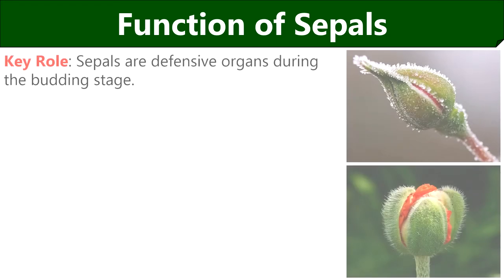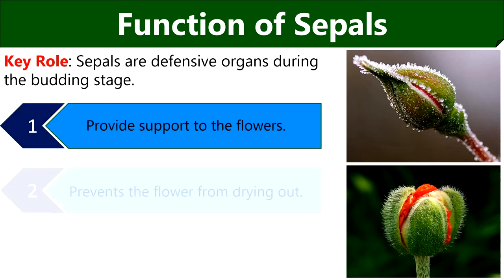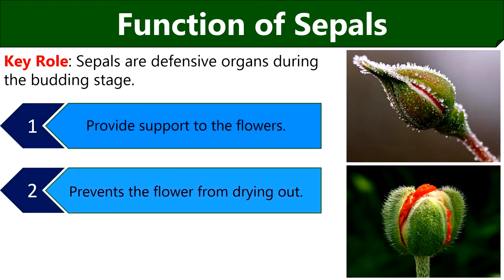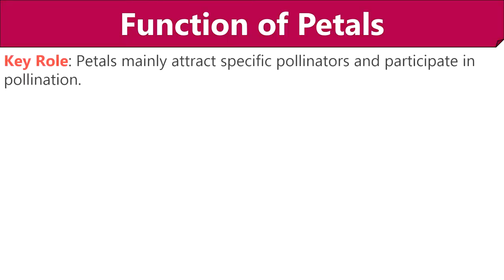Now it's time to know the function of each floral part, starting with sepals. Sepals are defensive in function and protect the flower during the budding stage. In these pictures you can clearly see how the sepals enclose and protect the inner components of a flower from harsh conditions during the developing stage. Sepals support the flower bud, prevent the flower from drying out, and also protect the delicate internal structures of a flower.